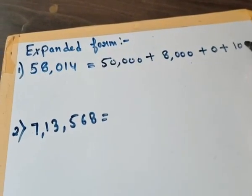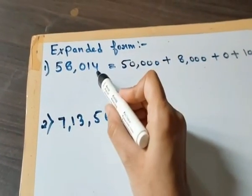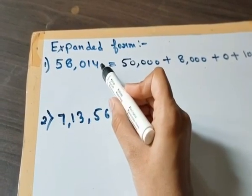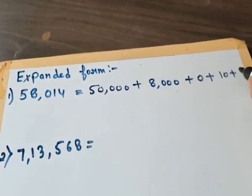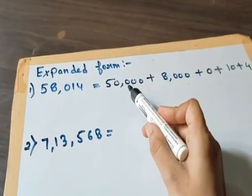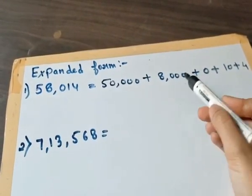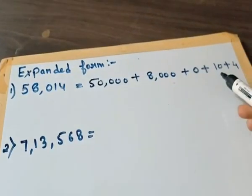Then there is 1 at the tens place, so at the tens place what we will write here, we will write 10. And at the last 4 is the number, so next we will write here 4. Now so the number is 50,000 plus 8,000 plus 0 plus 10 plus 4.